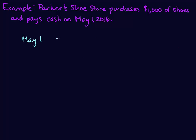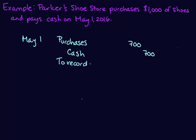Our first example: Parker's Shoe Store purchases $1,000 of shoes and pays cash on May 1, 2016. Remember that the shoes are Parker's inventory, but under the periodic system we're not going to use the inventory account until the end of the accounting cycle. Our journal entry has a date of May 1, a debit to an account called Purchases, and a credit to Cash.